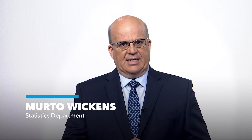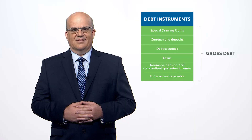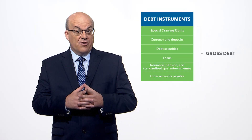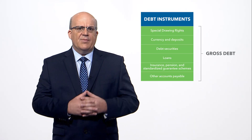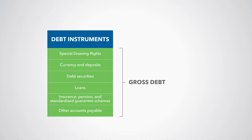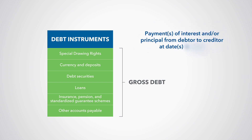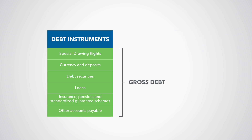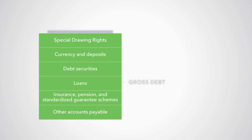Public sector debt statistics are a subset of the GFS balance sheet. We distinguish between gross and net debt. We define total gross debt as all liabilities that are debt instruments. A debt instrument is a financial claim that requires a payment or payments of interest and/or principal by the debtor to the creditor at a date or dates in the future. There are six groups of debt instruments.